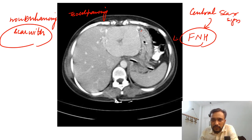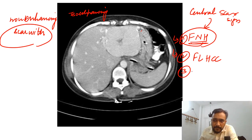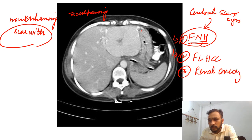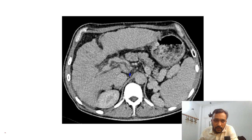We should be aware of the other lesions that show the central scar sign. They are: first, focal nodular hyperplasia; second, the fibrolamellar variant of HCC; third, renal oncocytoma; and fourth, serous cystadenoma of the pancreas.